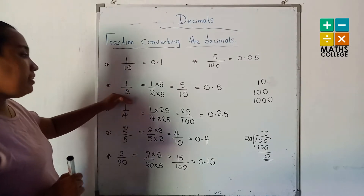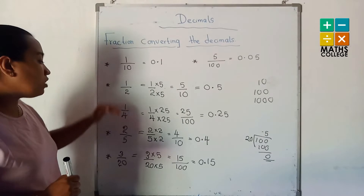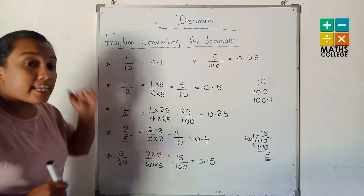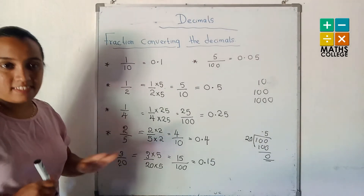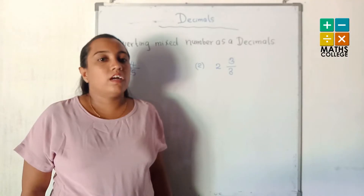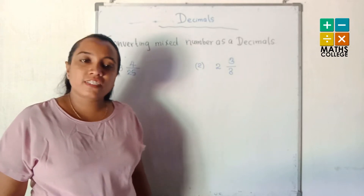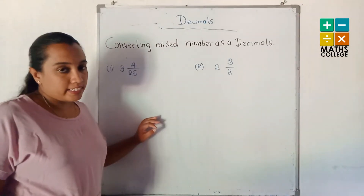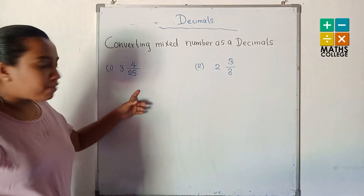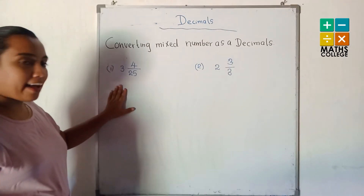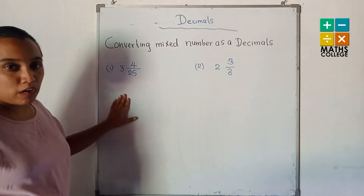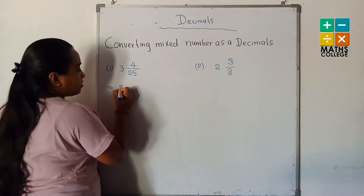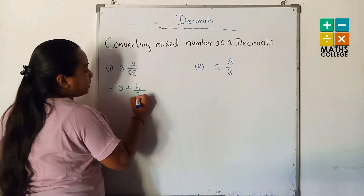Now you know how to convert other fractions as a decimal. Let's go to the next topic: how to convert a mixed number as a decimal. A mixed number contains two parts — the whole number and the fraction. For example, given 3 and 4 over 25, we first write it as 3 plus 4 over 25.